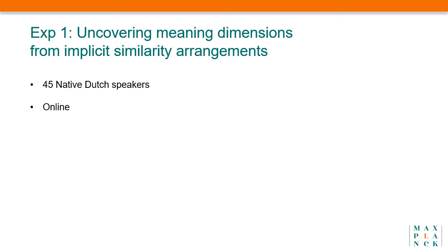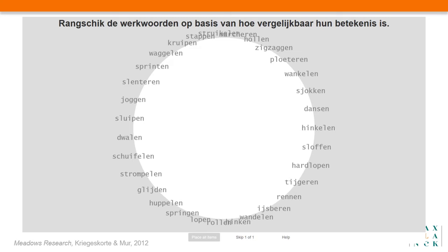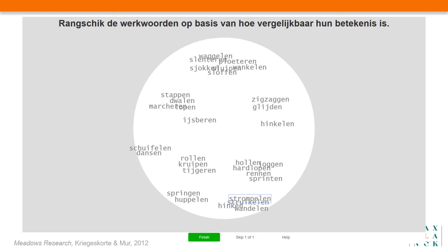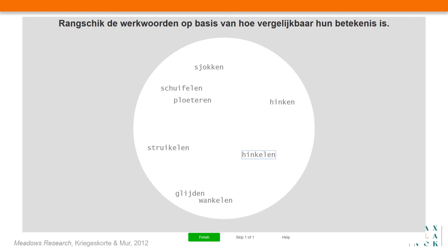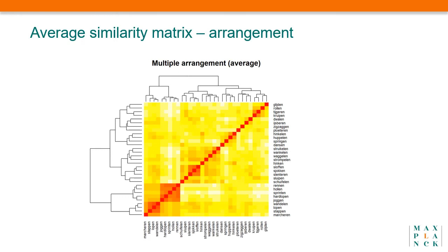In the first experiment, we wanted to uncover the meaning dimensions that underlie the lexical domain as perceived by native speakers. In this task, participants arrange the motion verbs on the screen according to similarity by clicking and dragging them. The algorithm is adapted and tries to reconstruct the participants' underlying multidimensional space by having them carry out successive two-dimensional arrangements with different subsets of the verbs. The results aggregated over all 42 participants can be visualized as a symmetric similarity matrix. Rows and columns represent each of the 31 motion verbs; warmer colors mean more similar, while yellow or white mean the verbs were perceived to be more different.